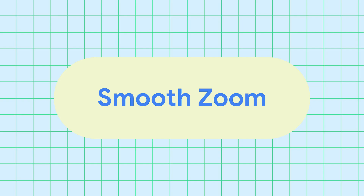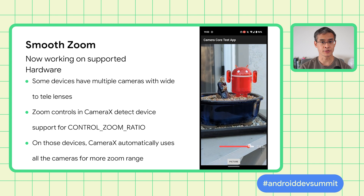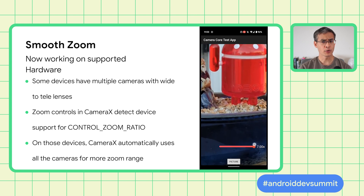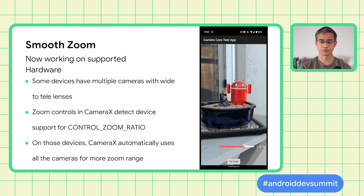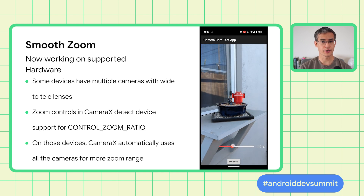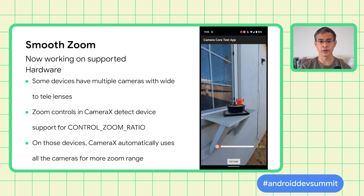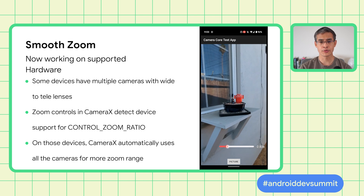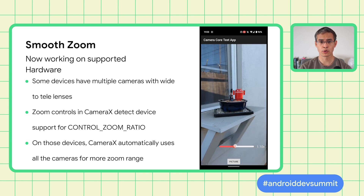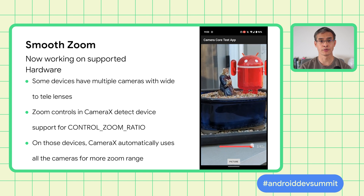Smooth zoom is another feature in 1.1. Some devices have multiple cameras with wide to tele lenses. CameraX can detect devices which support the smooth zoom framework. On those devices, the zoom control of CameraX will automatically use the full range of cameras for more zoom. So if you already use the zoom controls, when you compile with 1.1, your app will now access the full range of cameras on those devices.